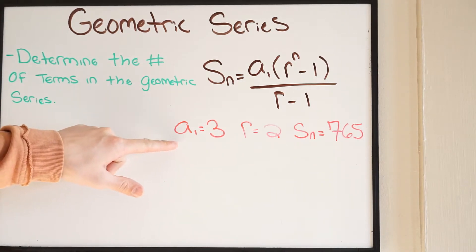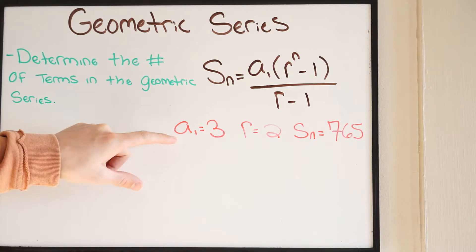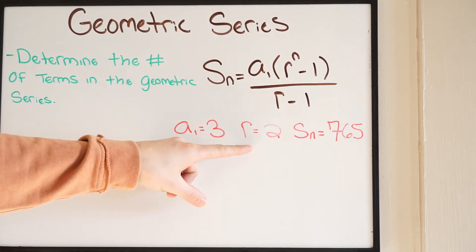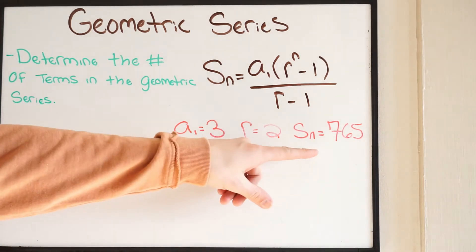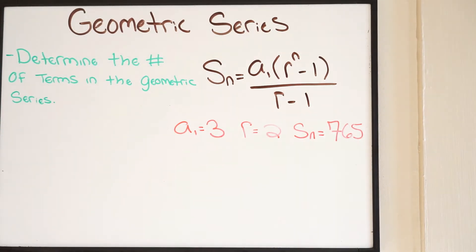A of 1, that's going to be the first term in our geometric sequence. R is going to be our common ratio in our geometric sequence, and S of N, this is going to be the sum of the geometric series.